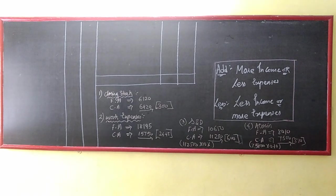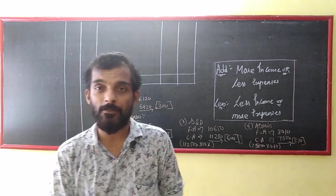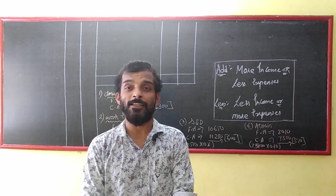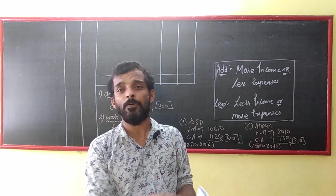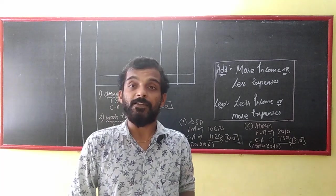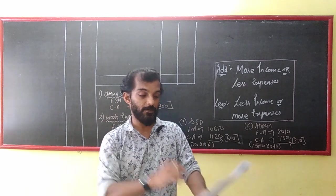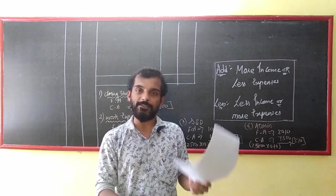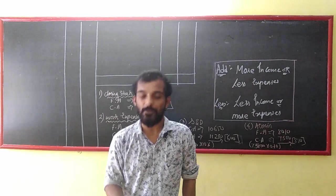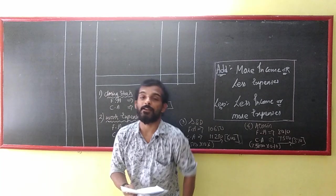Welcome to my channel. We will cover Google Accounts in the simplest and easiest way, so that you can not only pass the exam but remember the accounts for your lifetime. We are starting with sub number 4 of reconciliation of profits of cost and financial accounting. Sum number 1 — let's click on that so that you can understand how to analyze the question.